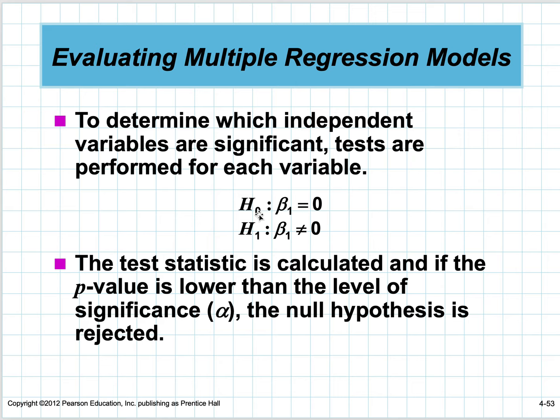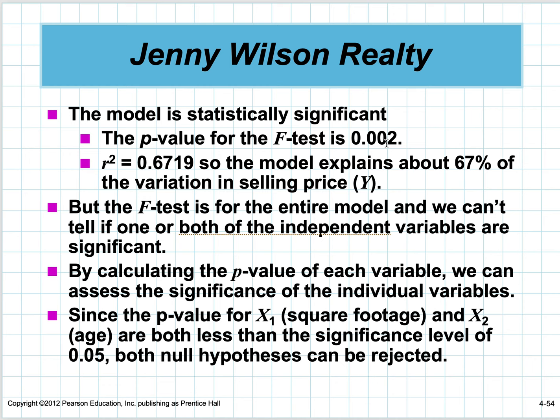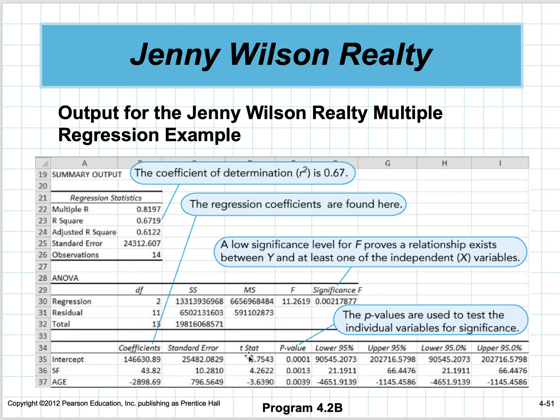Evaluation is similar to simple linear regression—we use the p-value for the F-test and R-squared are interpreted the same way. The F-test is for the entire model, and we can't tell if one or both independent variables are significant. By calculating a p-value for each variable, we can assess the significance of each independent variable individually. This uses a t-statistic, which is different from the F-statistic.